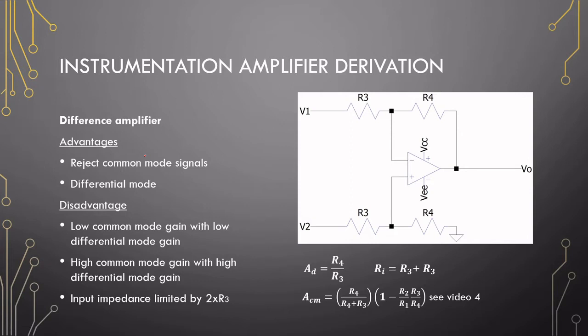The instrumentation amplifier is an adaptation of the difference amplifier. The difference amplifier has the advantage that we can get common mode rejection — the ability to reject signals and then amplify in differential mode. The disadvantage, however, is that if we want a low common mode gain, we can only have a low differential mode gain. And for a high common mode gain — one greater than one, so not rejecting noise as effectively — we can have a high differential mode gain. The two are kind of connected to one another.